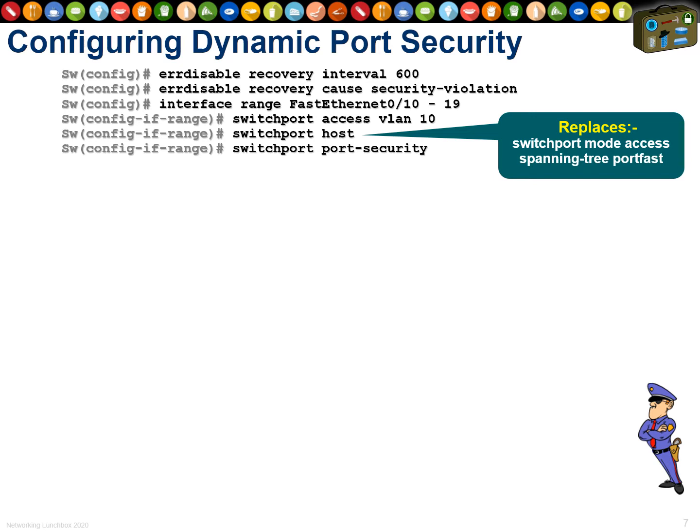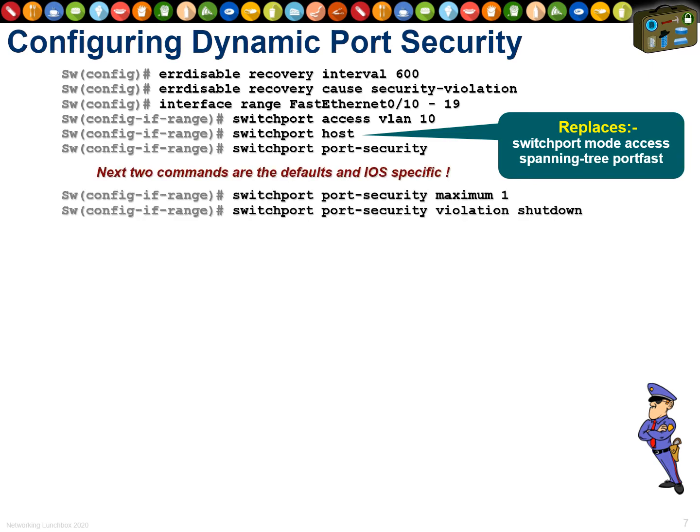Remember to turn on port security with the first command before setting parameters. 'Switchport port-security maximum 1' means learn one MAC address — as soon as a second MAC address hits this interface, shut it down. These two commands — maximum 1 and violation shutdown — are the defaults, so they won't appear in 'show run' unless you change them from their defaults.